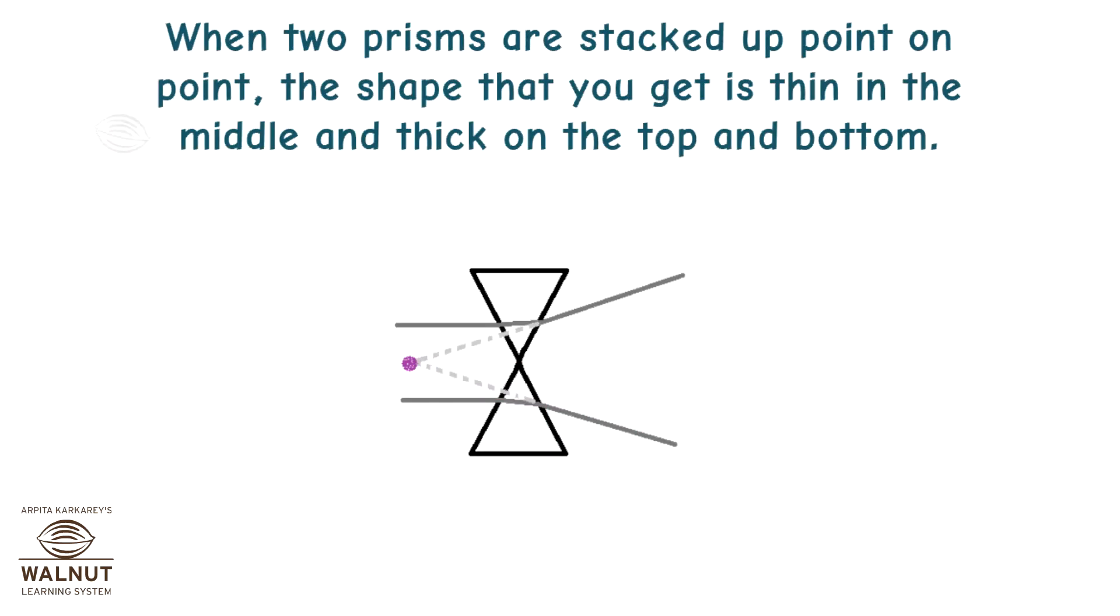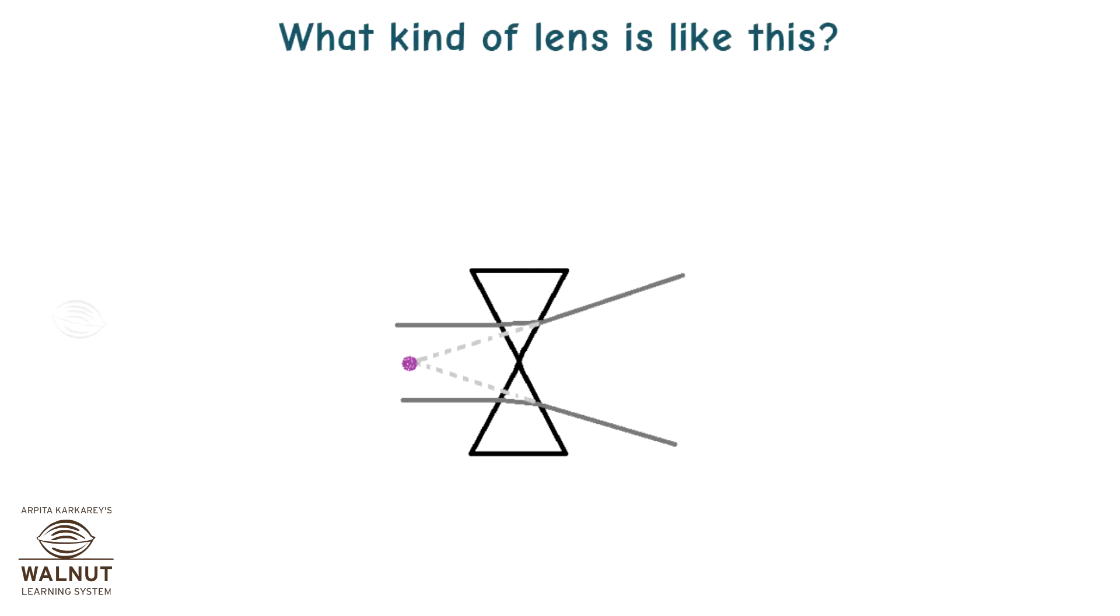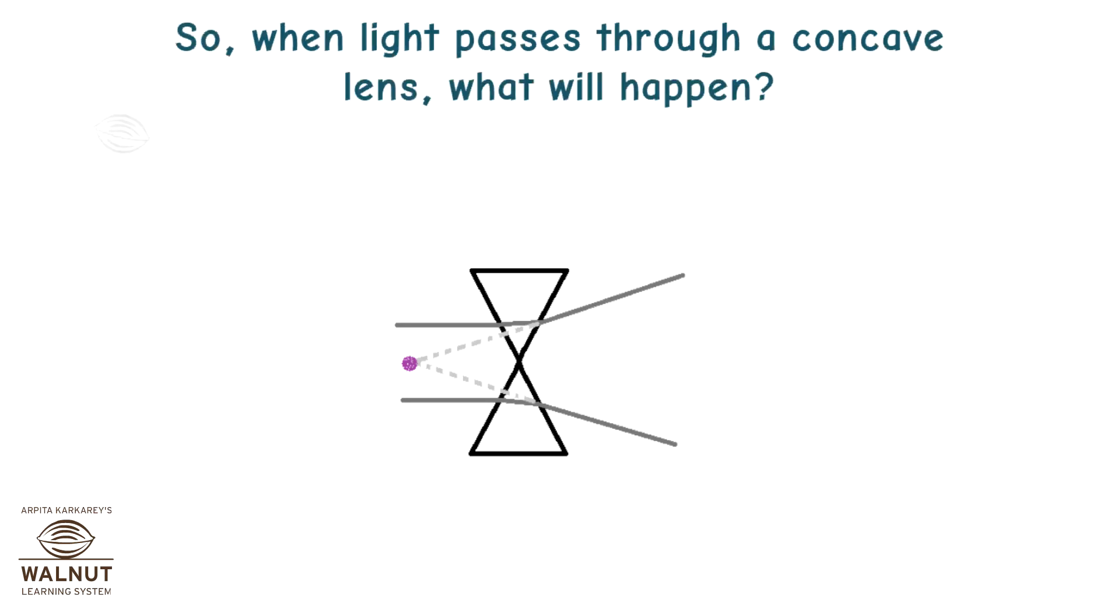When two prisms are stacked up point on point, the shape that you get is thin in the middle and thick on the top and bottom. What kind of lens is like this? A concave lens. So when light passes through a concave lens, what will happen?